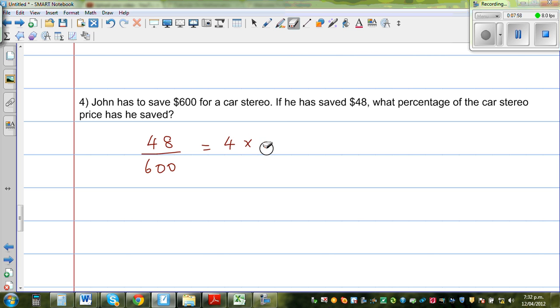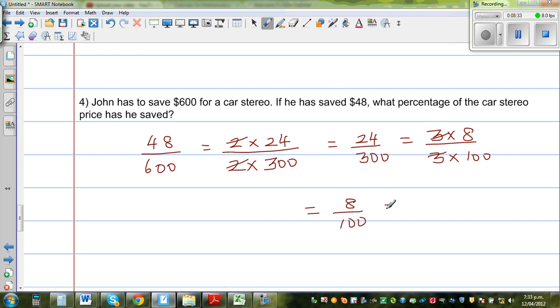So I want to start with 2 times 24 is 48. This is 2 times 300. So this is 24 out of 300. So 24 I can write as 3 times 8, and 300 I can write as 3 times 100. So 3 and 3 gets cancelled. This is 8 out of 100. So that is nothing but 8%.